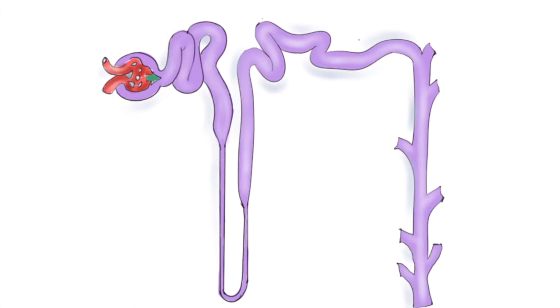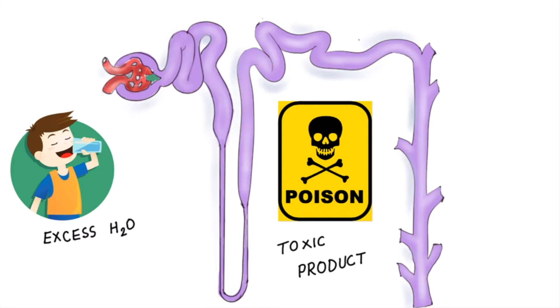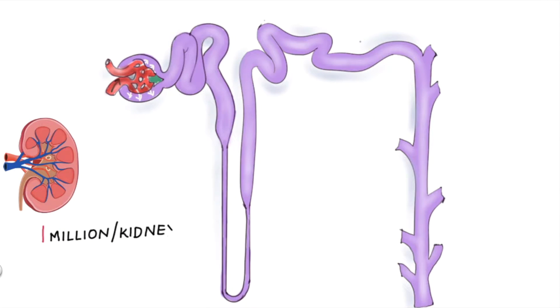Here we have our nephron, the unit of kidney mainly responsible for production of urine in order to get rid of excess water and toxic waste products. There are approximately 1 million nephrons in each kidney.